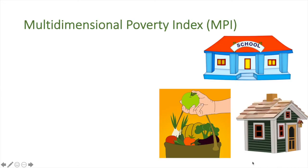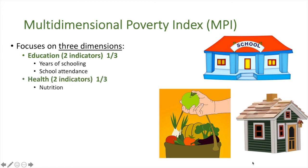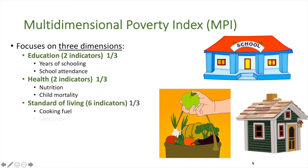Fourth is the Multi-Dimensional Poverty Index, or MPI, which focuses on three dimensions: education, health, and the standard of living. There are a total of 10 indicators within these three dimensions. Within education are years of schooling and school attendance. Within health are nutrition and child mortality. Within the standard of living are six indicators including cooking fuel, sanitation, water, electricity, housing, and assets.